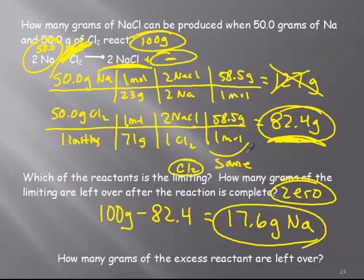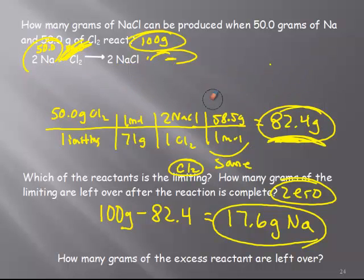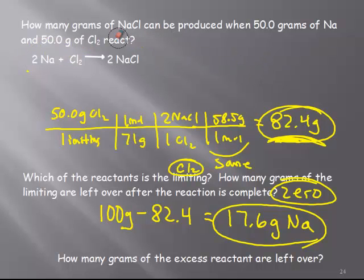This is the easiest type of excess reactant calculation because it's a synthesis reaction. It's not a single or double replacement where you would have another product to worry about. All 82.4 grams would go into that sodium chloride, so all 100 grams minus what you made equals the grams of the excess that are left over. That's the simplest way to calculate this. I'm going to erase the excess and show you another way to solve this.